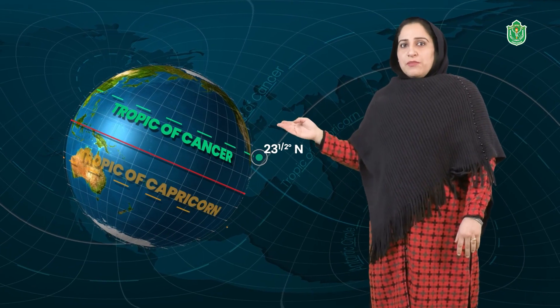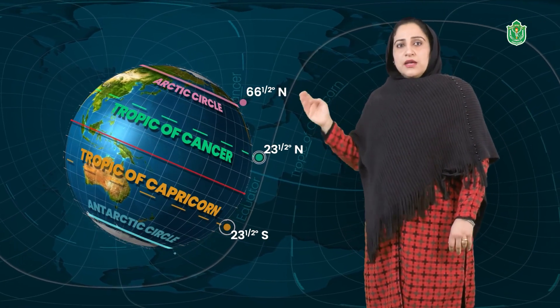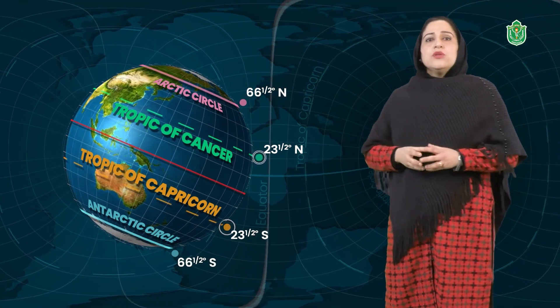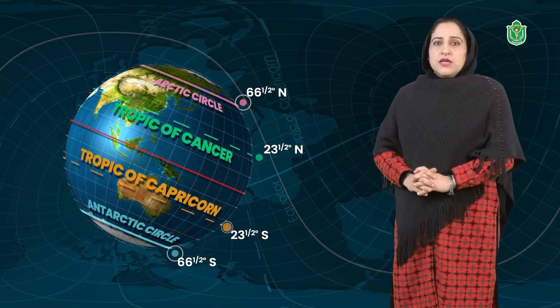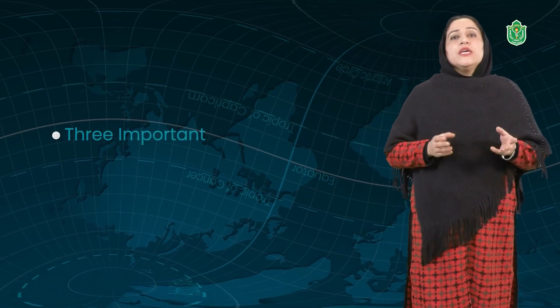The equator is the important latitude at 0 degrees and is taken as a reference point for other latitudes. Apart from the equator, we have other important latitudes: the Tropic of Cancer at 23 and a half degrees north, the Tropic of Capricorn at 23 and a half degrees south, the Arctic Circle at 66 and a half degrees north, and the Antarctic Circle at 66 and a half degrees south. We mark these latitudes because on the surface of earth we don't have the same climate — there are differences in heat, temperature, and climatic conditions. Depending on the intensity of heat, we divide the earth into three important heat zones.